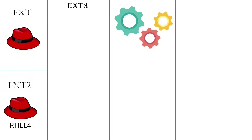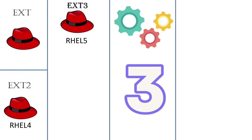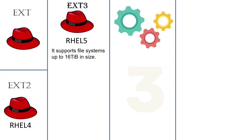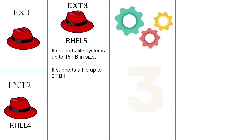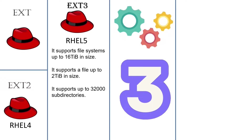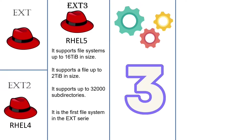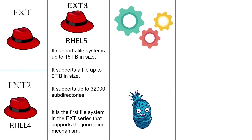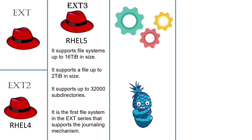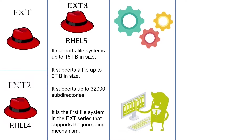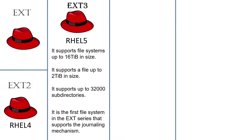ext3 was the third generation of the ext file system. It was the default file system in RHEL 5 and was the first in the ext series to support the journaling mechanism. It supports files up to 2TB in size.